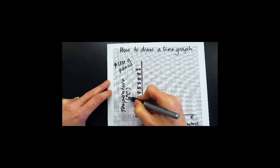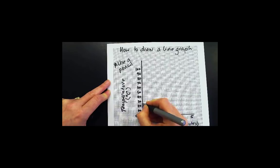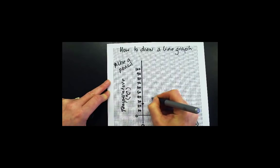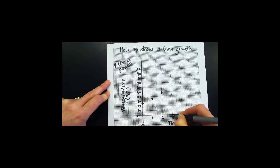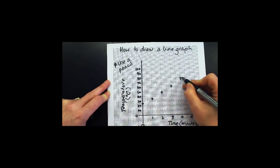I've made sure that both my axes are labelled and have units. Now we can plot the points onto the graph. You plot them with a small, neat cross. And when you have all the crosses on your graph,